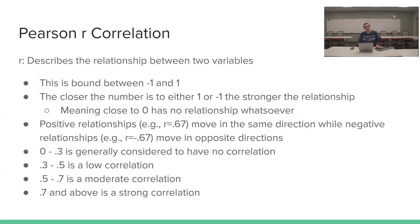We're going to go into these analyses a little bit further. The first one that we're kind of going to cover is the Pearson correlation. It's often represented by that small r up there. And this describes the relationship between two variables. This statistic is bound between negative one and one, meaning it's not going to exceed either of those numbers. The closer the number is to either one or negative one, the stronger the relationship between the two variables. Meaning close to zero has the least amount of relationship. None, actually.